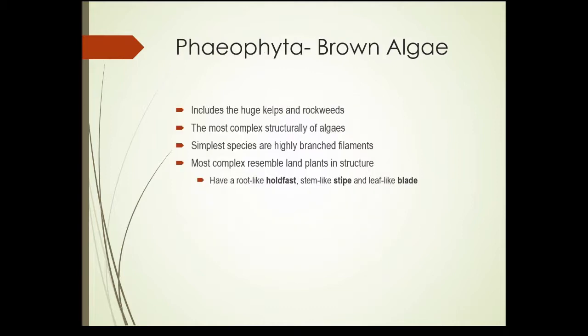Next we'll have a look at brown algae — Phaeophyta — which includes the kelps and the rockweeds. These are the most complex algaes in terms of structure. The simplest ones are highly branched filaments, similar to what we saw in the red algae, and the most complex really start to look more like land plants.